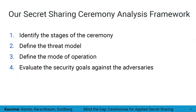This brings us to our secret sharing ceremony analysis framework. At a high level, it can be summarized with the following components. One: identify the stages of the ceremony, including share generation, secret recovery, and distributing shares to participants. Two: define the threat model — who are the adversaries, what are their abilities and goals, and what are the security goals of the ceremony? Three: define the mode of operation, whether base mode or extended mode. Finally, evaluate the security goals against the identified adversaries. These components have relationships between them and are not strictly sequential.